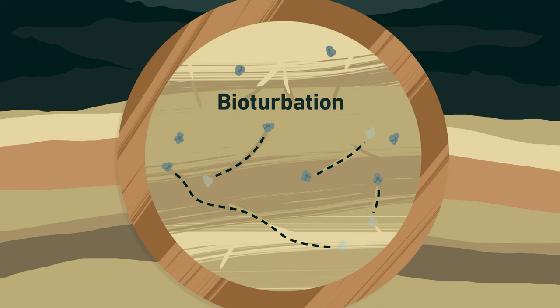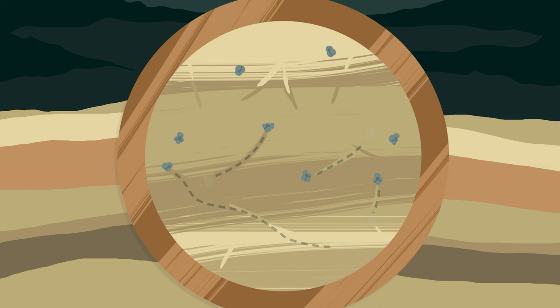This is when the shells of the foraminifera come in handy. While some stay in place, others get moved around. To get an idea of the degree of disorder, it is useful to look at the radiocarbon concentration in the different foraminifera species. This also gives us information on the radiocarbon signature of the water mass in which the organism lives.